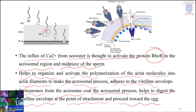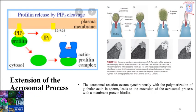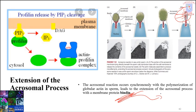The acrosomal process, formed after polymerization of actin filaments, has membrane proteins attached to its external surface. These are called bindin. Bindin is the protein present on the acrosomal process of sea urchin sperm that mediates recognition of eggs of the same species. Bindin binds to specific receptors on the egg of the same species.